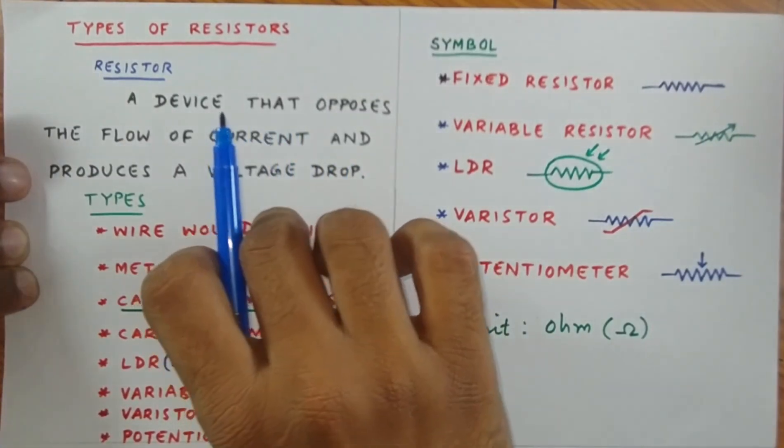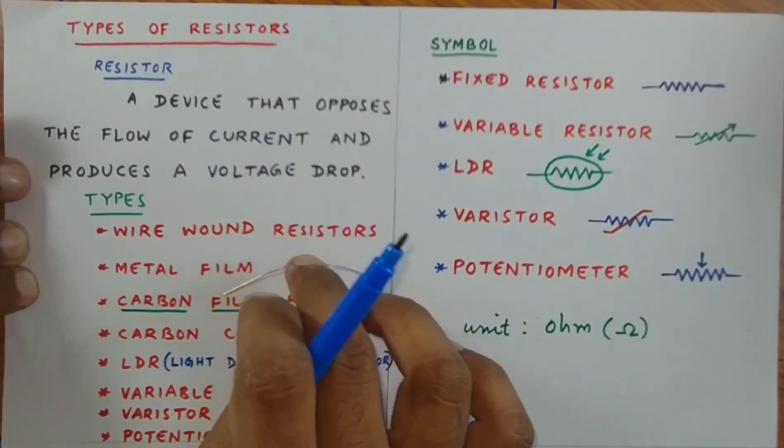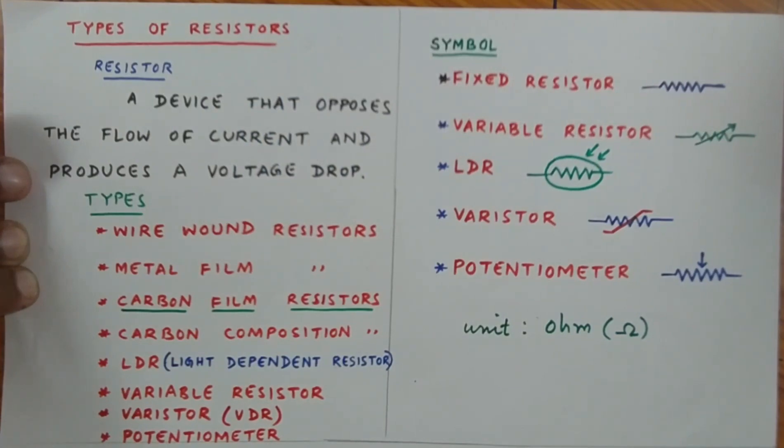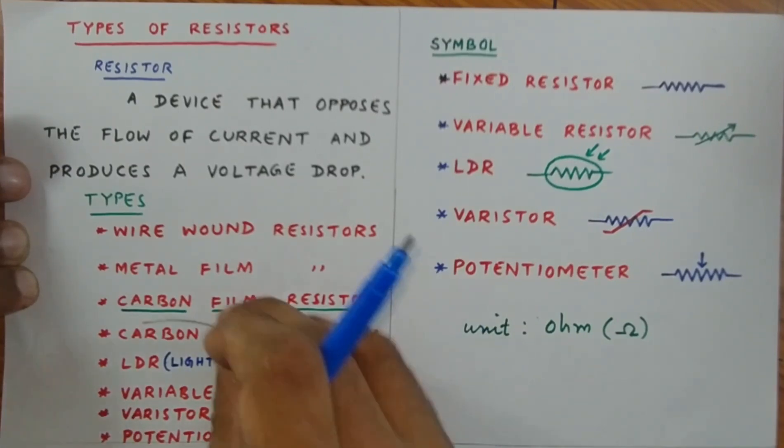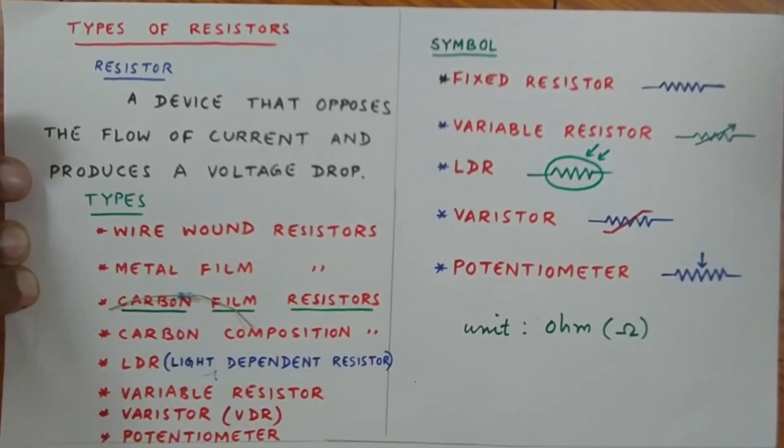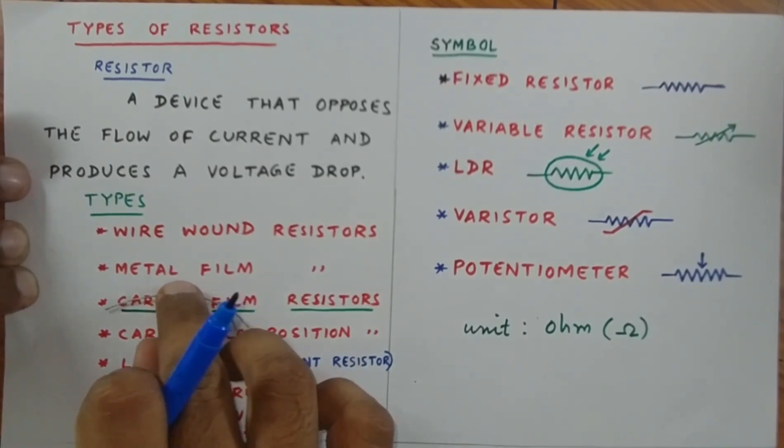Then carbon film resistors. This is the most commonly used type. Here's a carbon film resistor. It is available in different power ratings. What is placed here is a quarter watt carbon resistor.